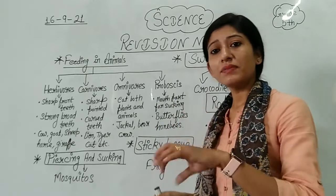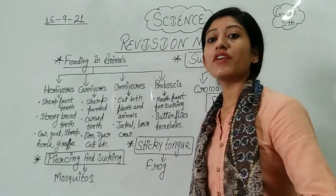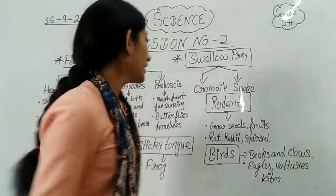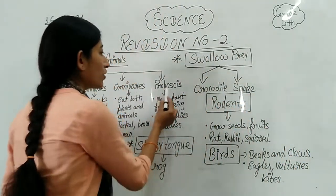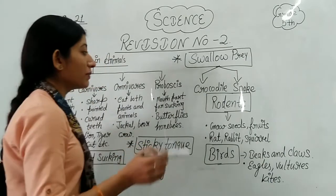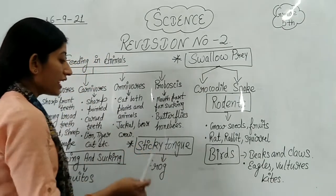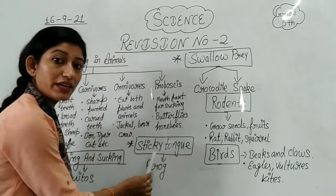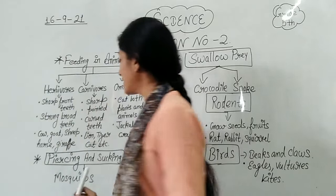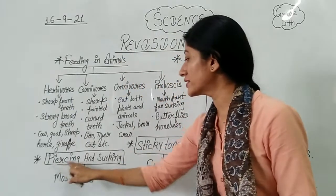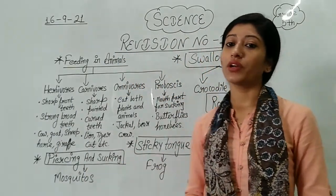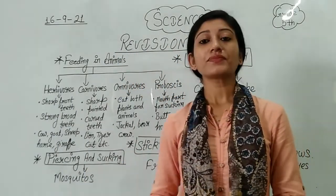Then there are some different types of feeding habits that we see, like proboscis. Similarly, some animals have a sticky tongue. And similarly, some have a piercing and sucking nature. We are going to discuss all of these.